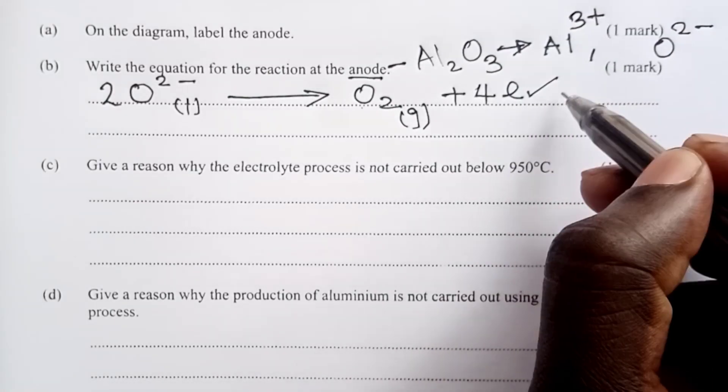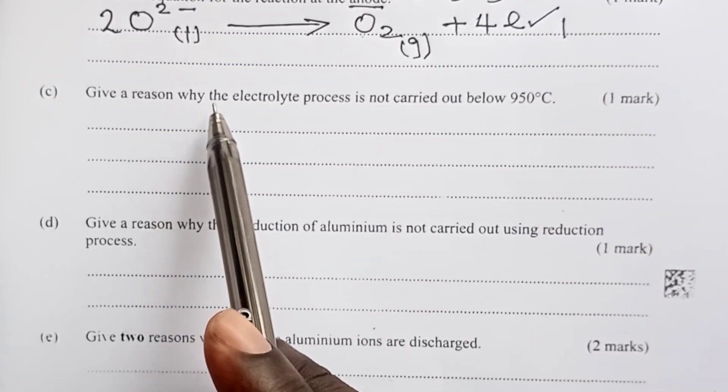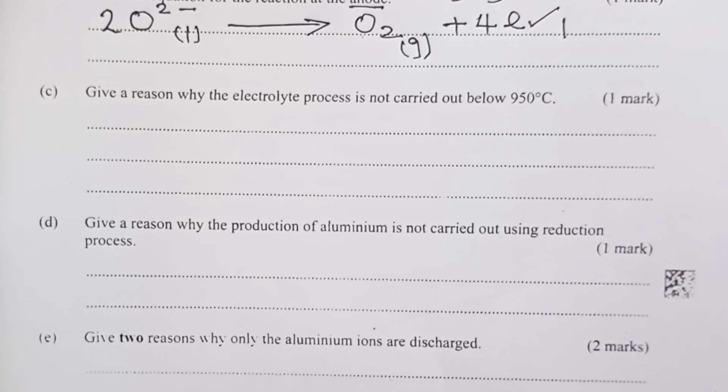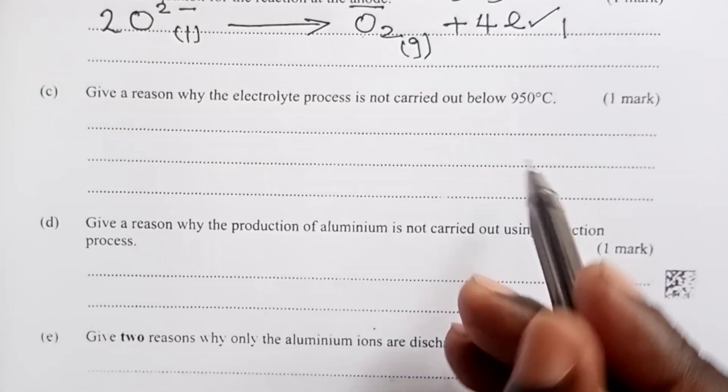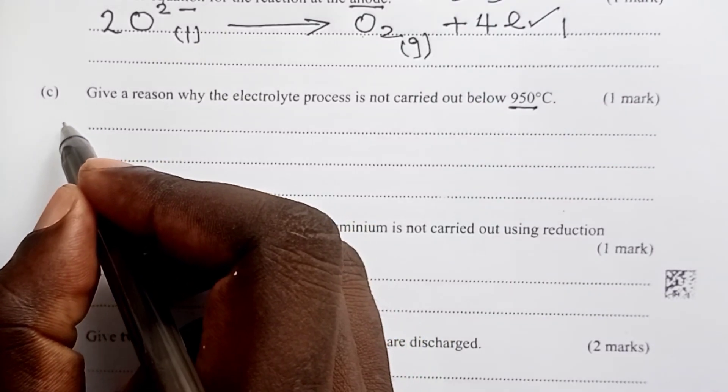To the next question, we are asked to give a reason why the electrolyte process is not carried out below 950 degrees Celsius. Here, I want to remind our students that the melting point of the mixture of cryolite and aluminum oxide is about 800 degrees Celsius. What does it mean? It means that anything below around 950 here, the mixture will not be in liquid state, and therefore, conduction of current will not be possible.